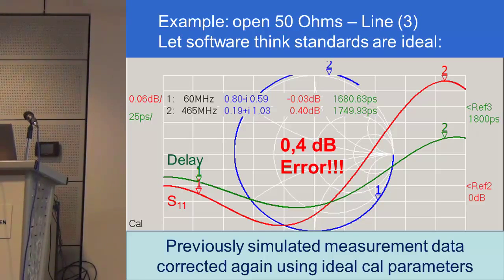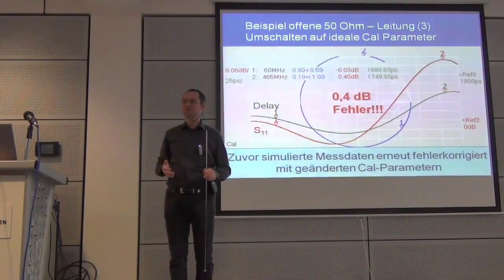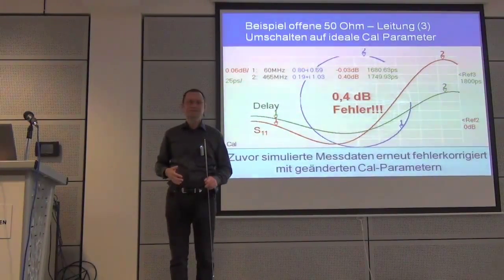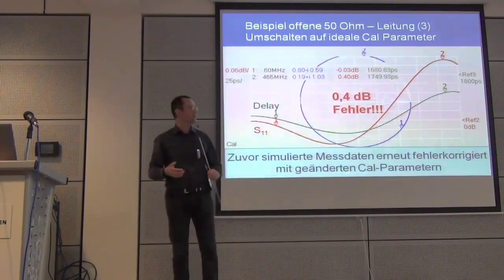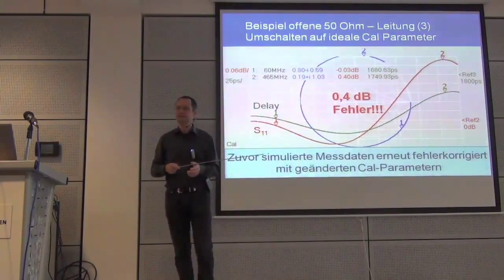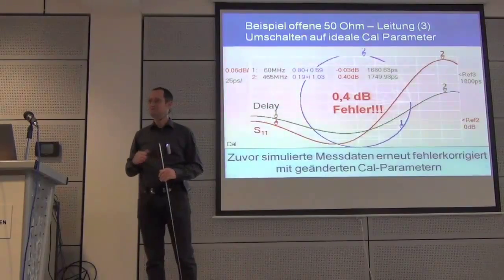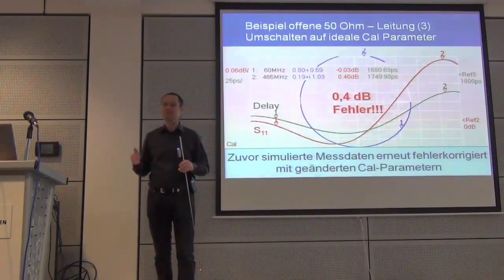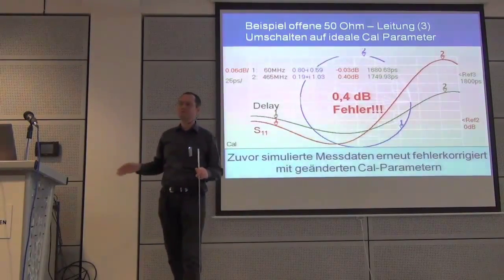Question from the audience: what does it mean if the trace is running outside the Smith chart circumference? Running along the circumference means everything is reflected; running outside means more than everything is reflected. That is of course not possible for passive components, but dealing with amplifiers which have negative differential resistances, it can happen. If you see a trace outside the Smith chart when measuring passive elements such as filters and components, then you have made something wrong.